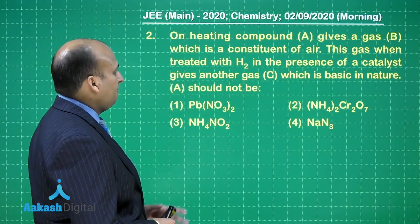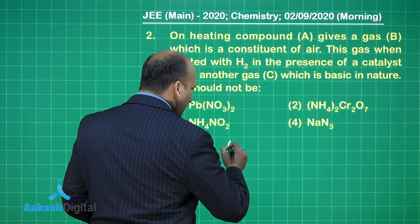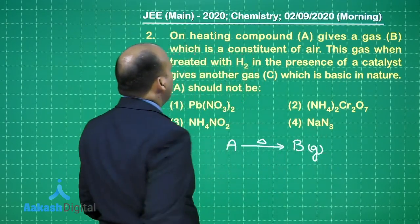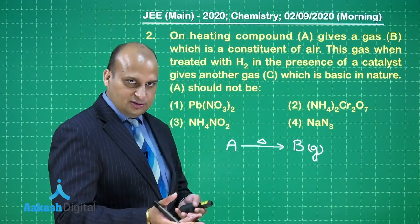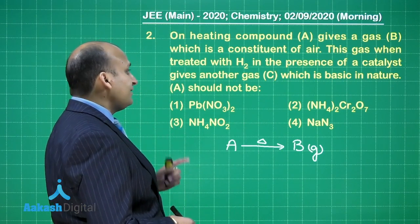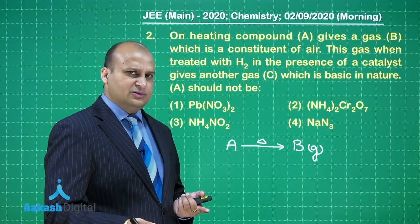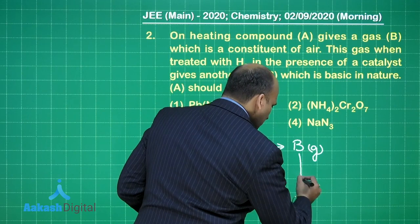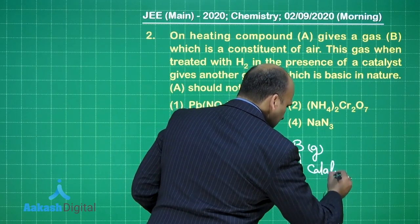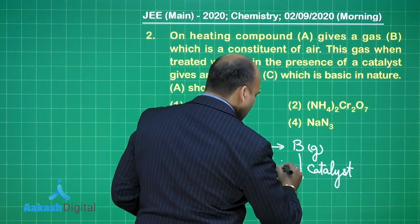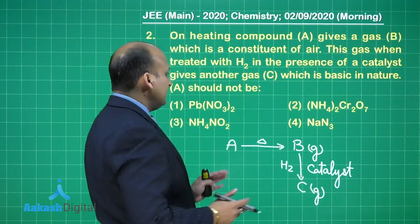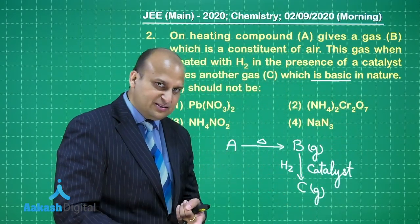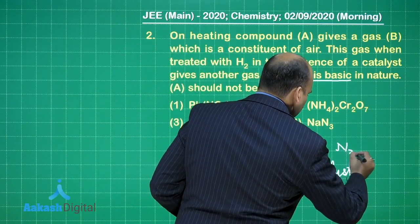Next question: on heating compound A, it gives a gas B, which is a constituent of air. So it can be either nitrogen or oxygen. This gas when treated with hydrogen in the presence of a catalyst gives another gas C. You do not treat oxygen with hydrogen in the presence of a catalyst — you treat nitrogen with hydrogen in the presence of a catalyst. So C should be ammonia. As it is also given that this gas is basic in nature — H₂O is not basic, NH₃ is basic. So we are very sure that B is nothing but nitrogen.